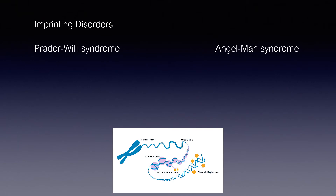Here we have two disorders. In Prader-Willi syndrome, maternally derived genes are silenced and this typically happens when the paternal allele is mutated or deleted. So we can say that the P stands for paternal deletion or mutation.